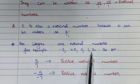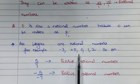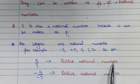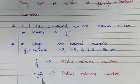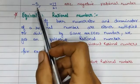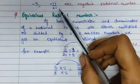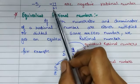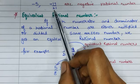Every integer can be written as a rational number. Now, 5 upon 7 has no negative sign, so this is a positive rational number. Minus 5 upon minus 7 is also a positive rational number because we can cancel these two signs. Then minus 5 and minus 17 upon 21 are negative rational numbers because they contain a negative sign.